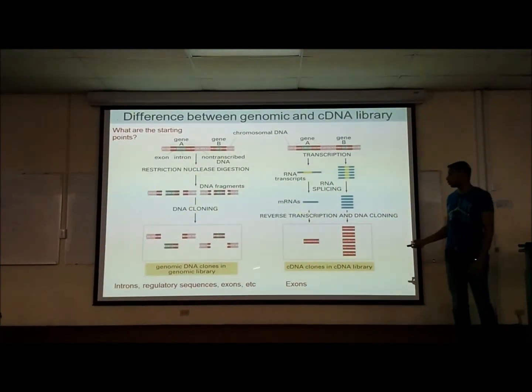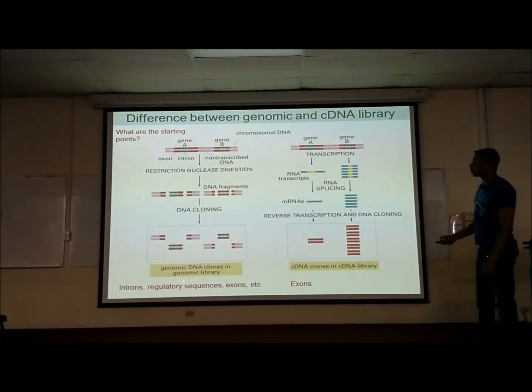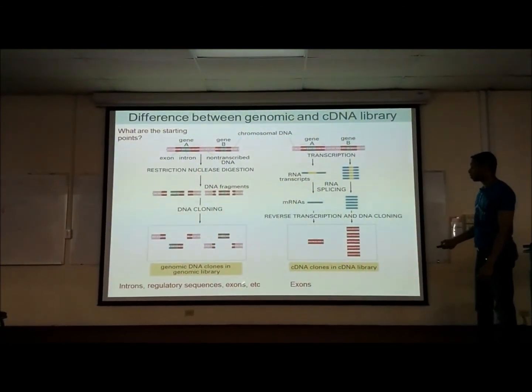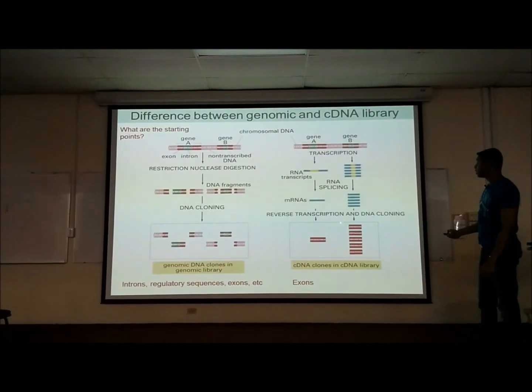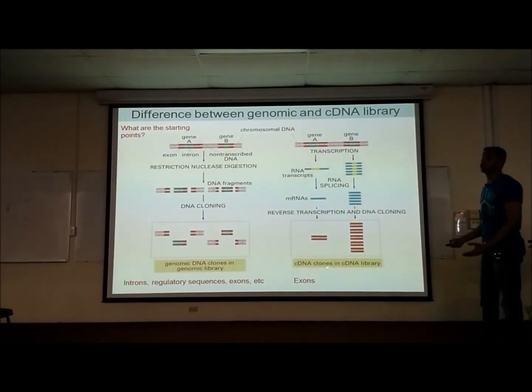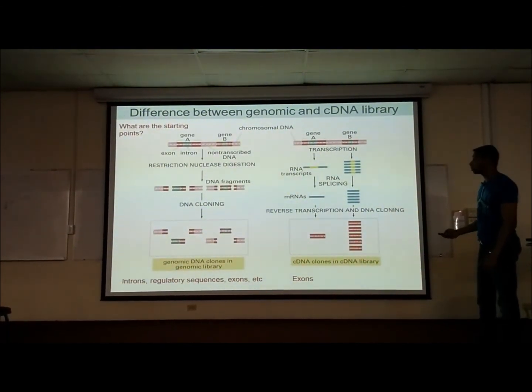And here's the difference between genomic libraries and cDNA libraries. Genomic libraries have introns, regulatory sequences, and exons. Our cDNA library, because we started with mRNA, and mRNA gets spliced and eukaryotes, and we're left with only exons, only have exons.